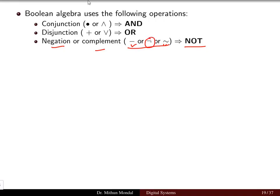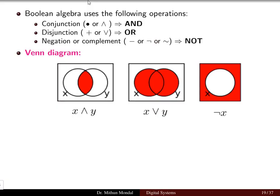In mathematics, set theory, computer science, digital electronics, and the EEE branch, different symbols are used to represent the same Boolean function. We have studied the Venn diagram in mathematics, and it depends on the Boolean algebra functions — AND, OR, and NOT — to represent the set theory of two binary variables X and Y.